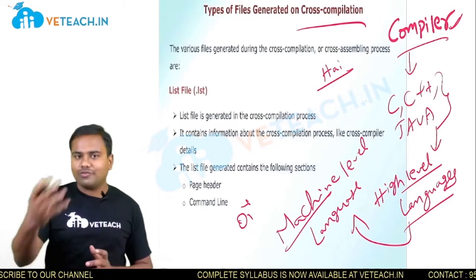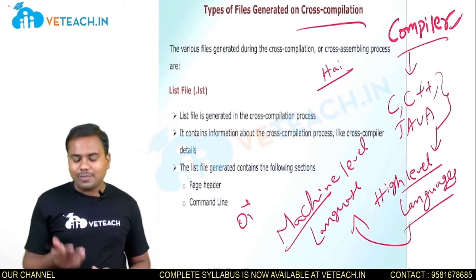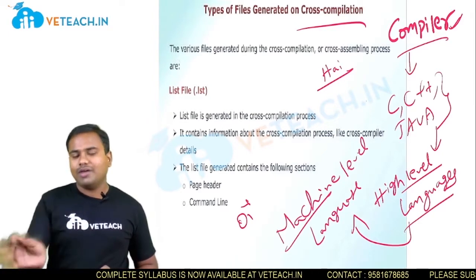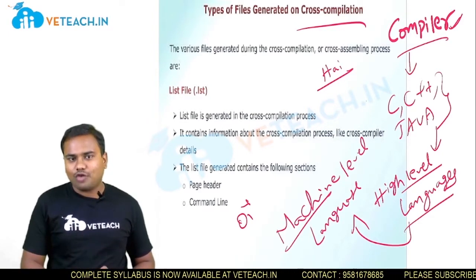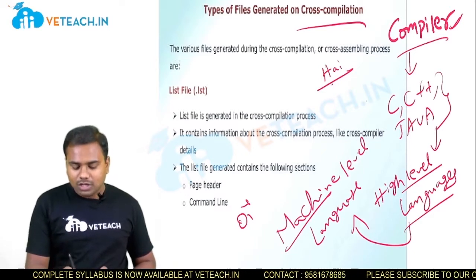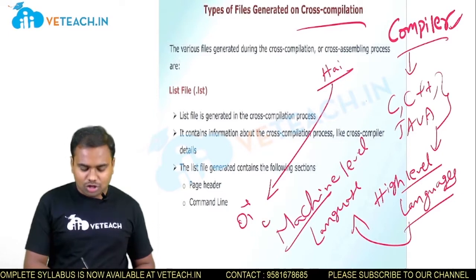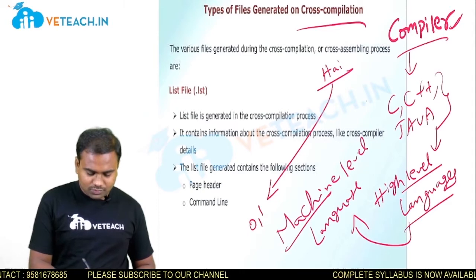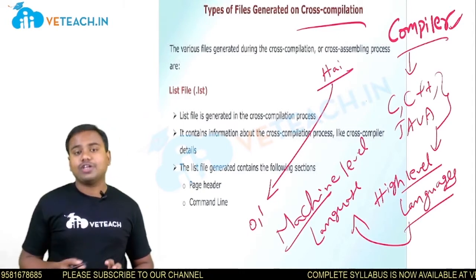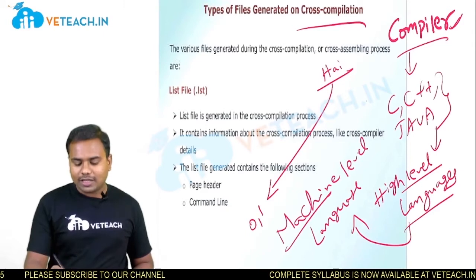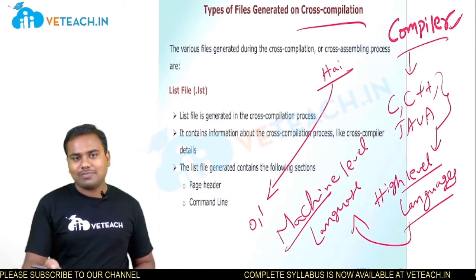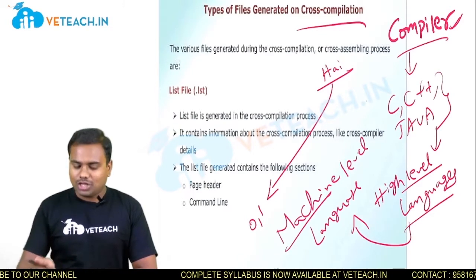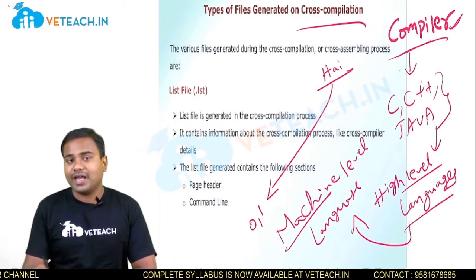Let's take an example. I need to send the message 'Hi' to my friend. So simply, I type 'H-A-I' and I will forward that message to my friend. But this 'Hi' message what I type will be converted to the machine level language — zeros and ones — because the system can't understand the high level language. So for that reason, we need to convert that to zeros and ones, and this conversion will be done by using this compiler concept.